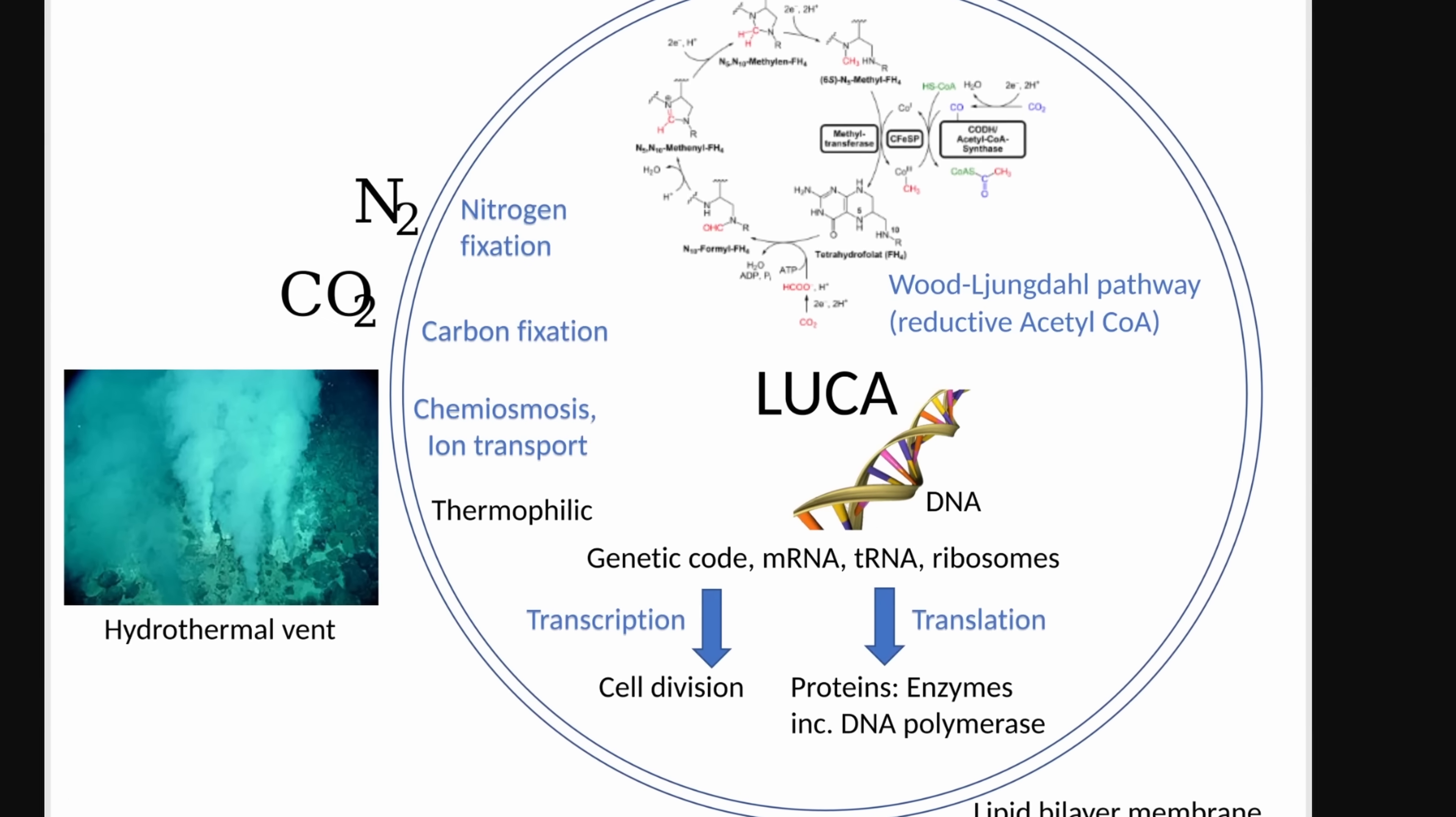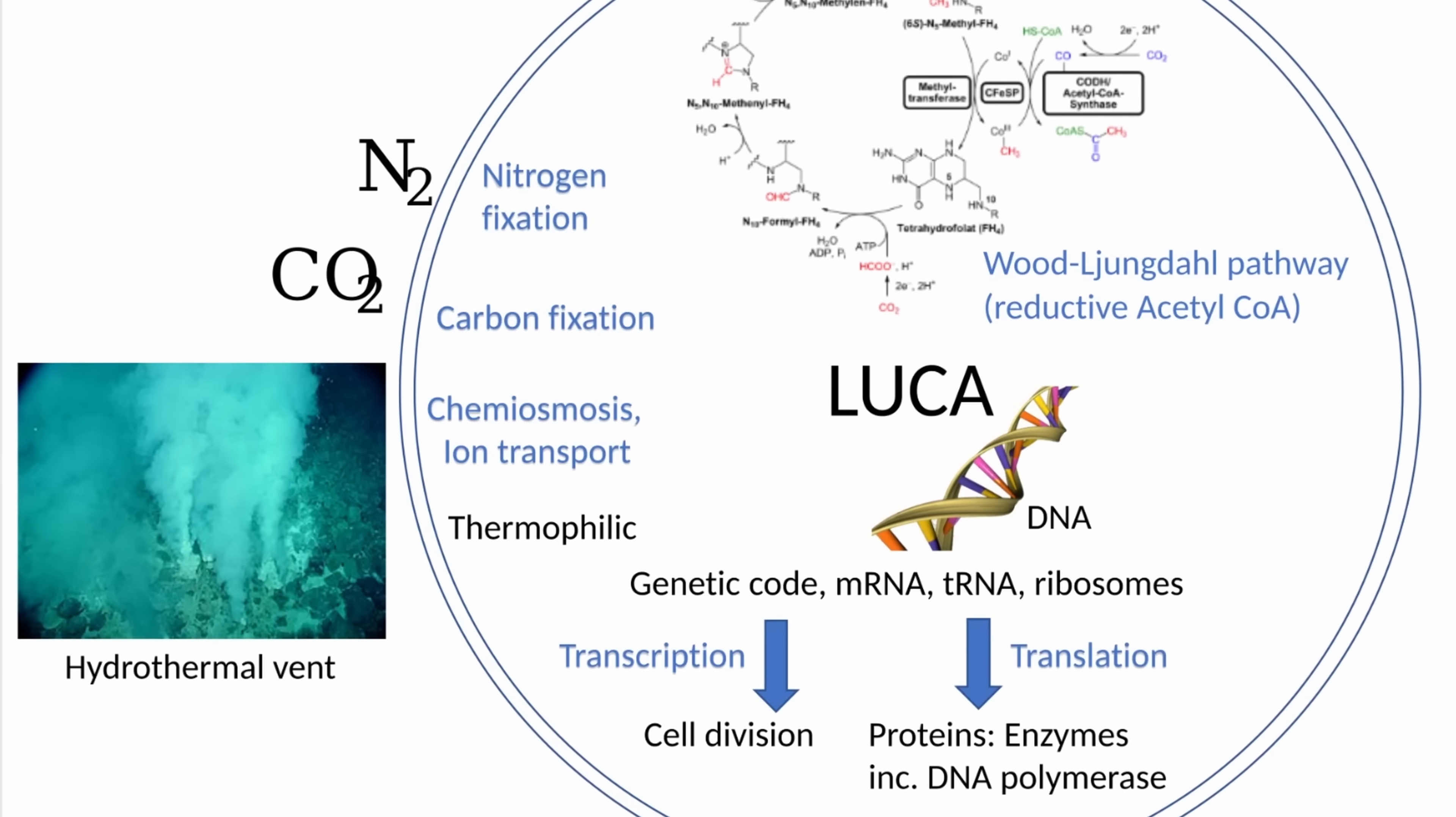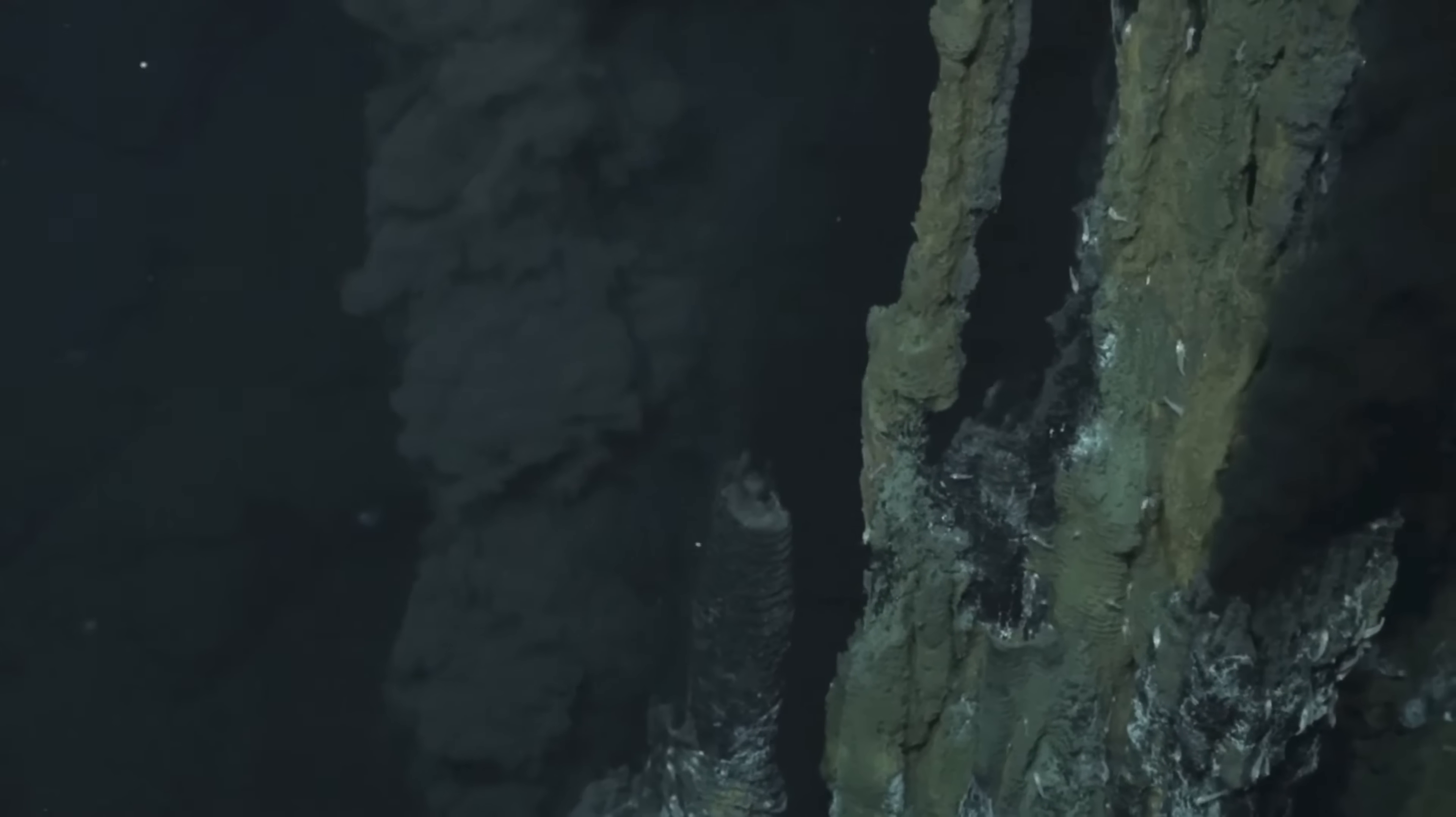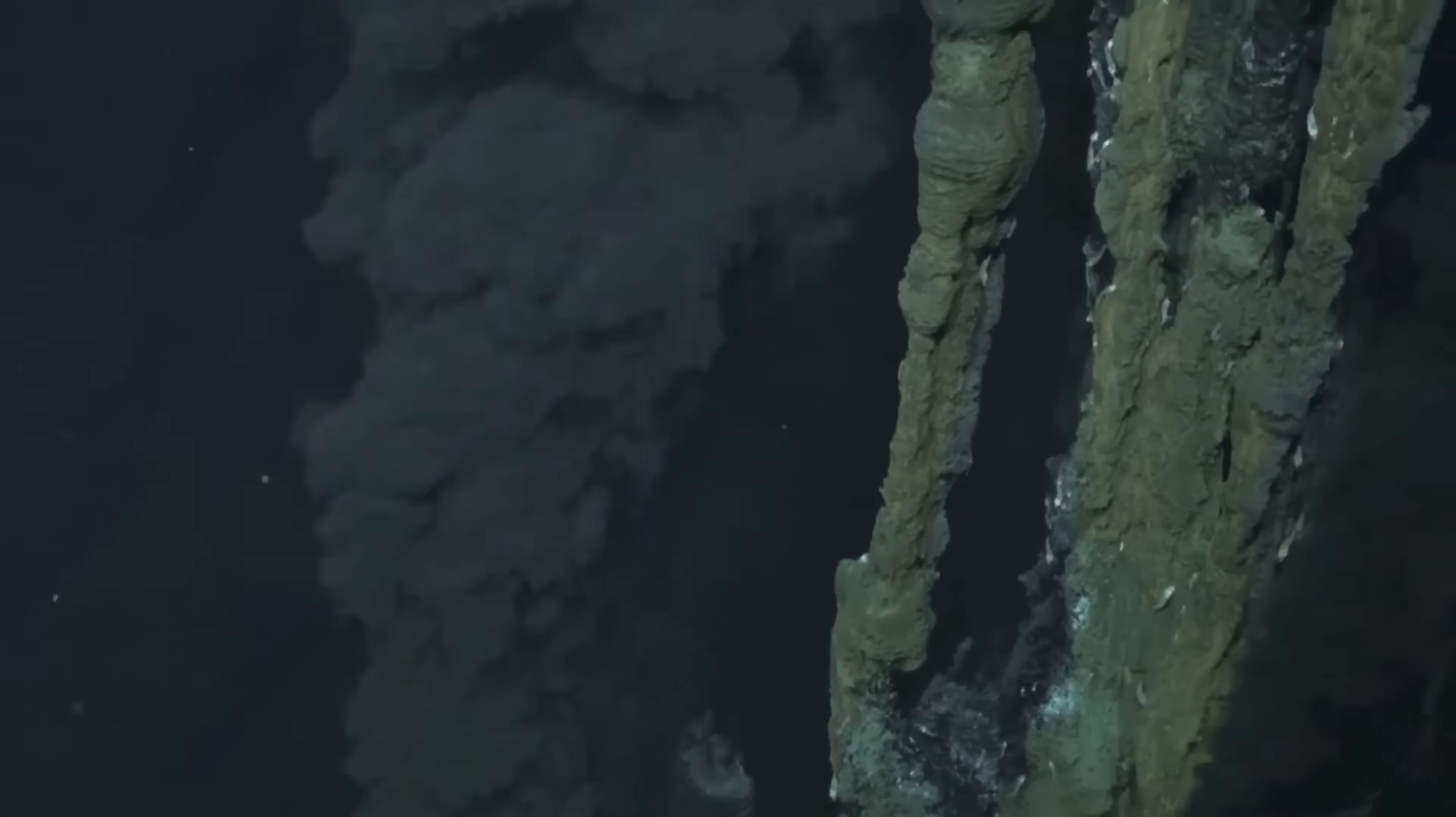And according to those earlier studies, it potentially lived in oxygen-free environments and used some kind of CO2 fixing and maybe nitrogen fixing, while basically being dependent on hydrogen and residing very close to hydrothermal vents. Geochemically active and environmentally rich environments that essentially provided it with everything—CO2, hydrogen, even iron—that it potentially used to create various proteins.